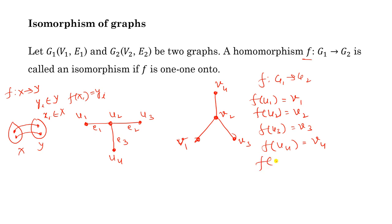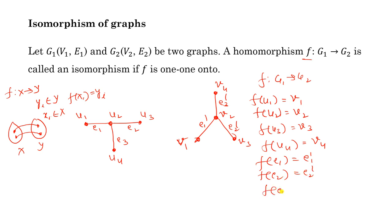We can also define the mappings of edges: f(e1) = e1 dash, f(e2) = e2 dash, and f(e3) = e3 dash. Edge e1 is between u1 and u2, so e1 dash is between v1 and v2. Similarly for e2 dash and e3 dash.